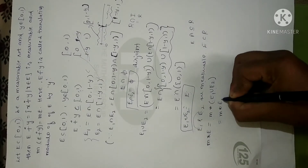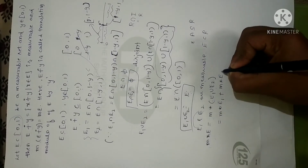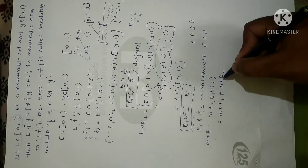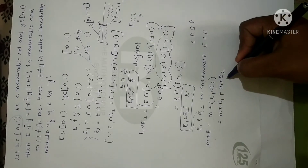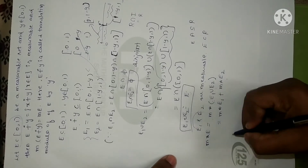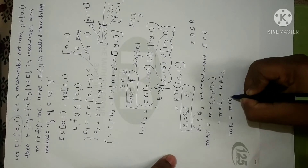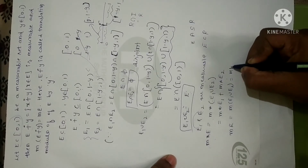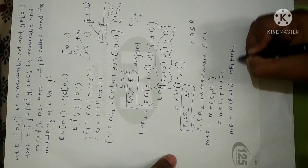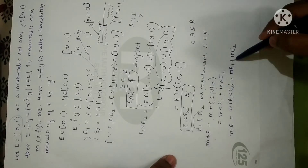So we can write m*(E) = m*(E1 ∪ E2) = m(E1) + m(E2), applying the restricted measure. Now let me define translation modulo for E1 with element y.